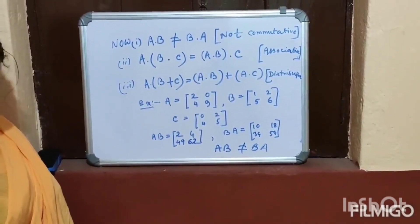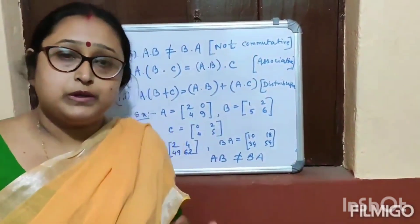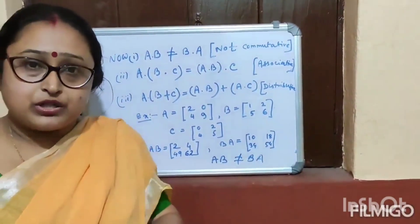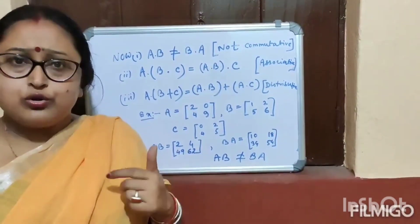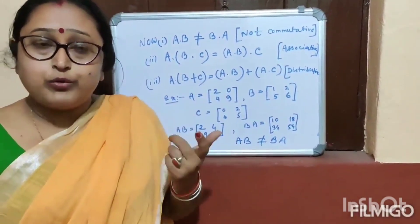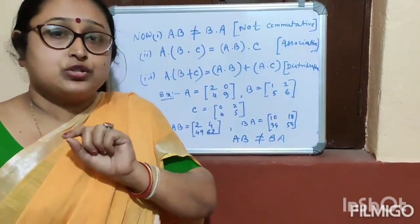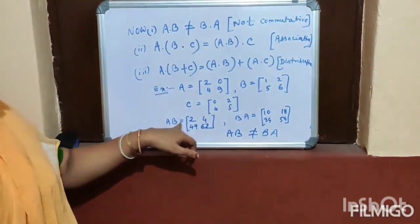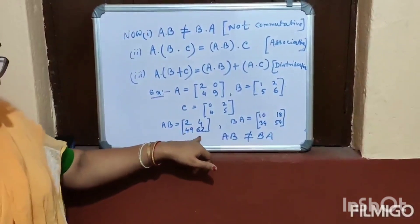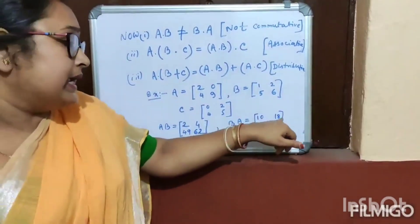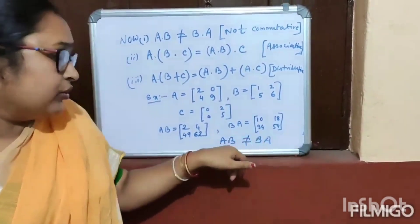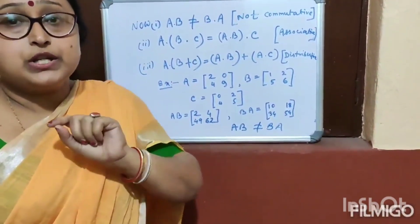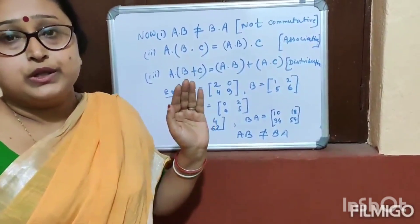What is matrix multiplication? You know the way to multiply. Matrix multiplication is not commutative. In the example, AB = [2, 4, 49, 62] and BA = [10, 18, 34, 54]. AB not equal to BA. That's why matrix multiplication is not commutative.